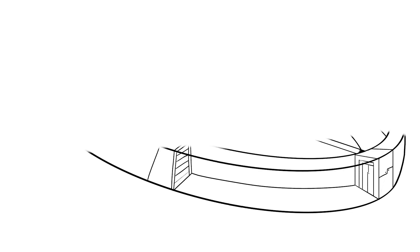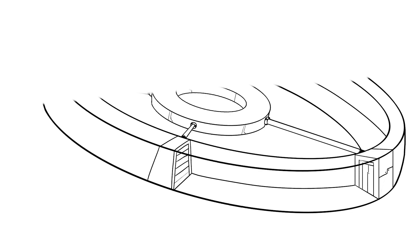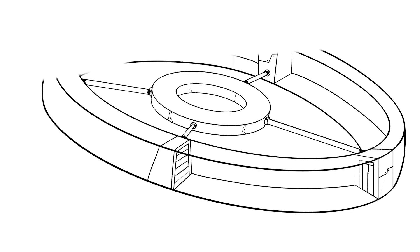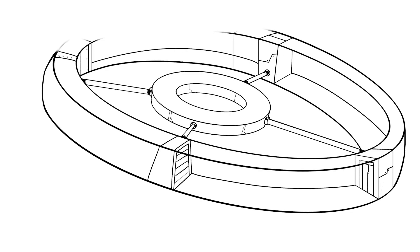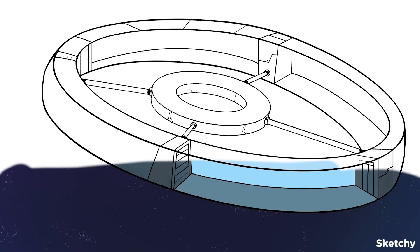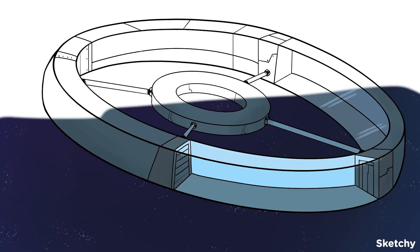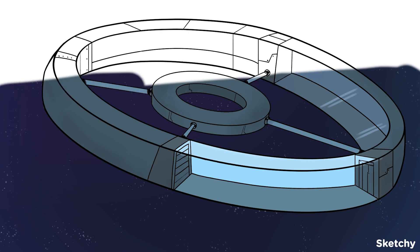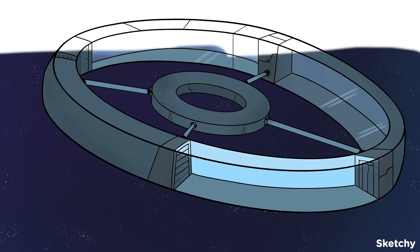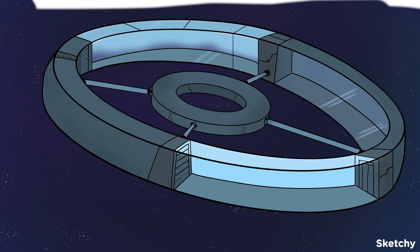The Interplanetary Space Station — a not-so-humble abode for astronauts that need some space — is the first destination for this chapter covering cell cycle and division. Let me tell you everything you need to know about the cell cycle.